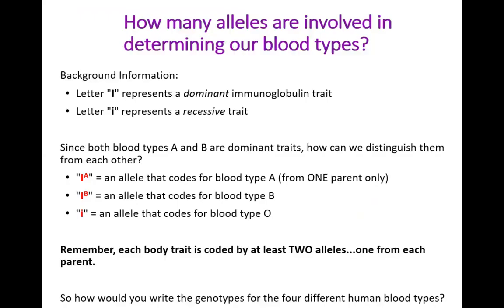Now, what about human blood type? As you already know, there are four human blood types: type A, type B, type AB, and type O. It turns out there are three different alleles that can code for blood type. Depending upon which two of these three alleles are inherited, it will result in a different blood type.